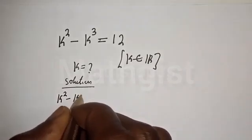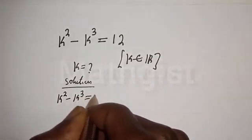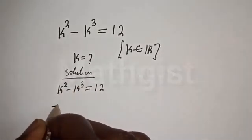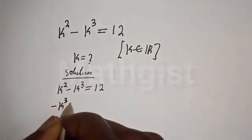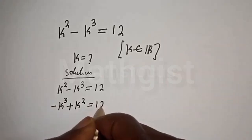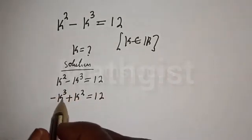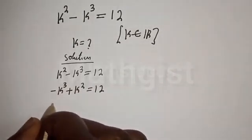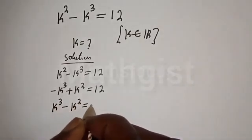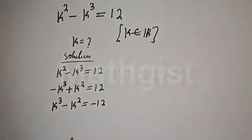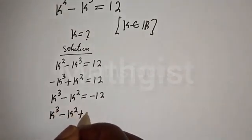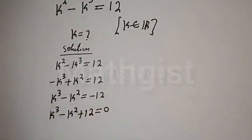k squared minus k raised to power 3 is equal to 12. We can rearrange this: we have minus k raised to power 3 plus k squared is equal to 12. Multiplying through by minus 1 gives k raised to power 3 minus k squared is equal to minus 12, then k raised to power 3 minus k squared plus 12 is equal to 0.